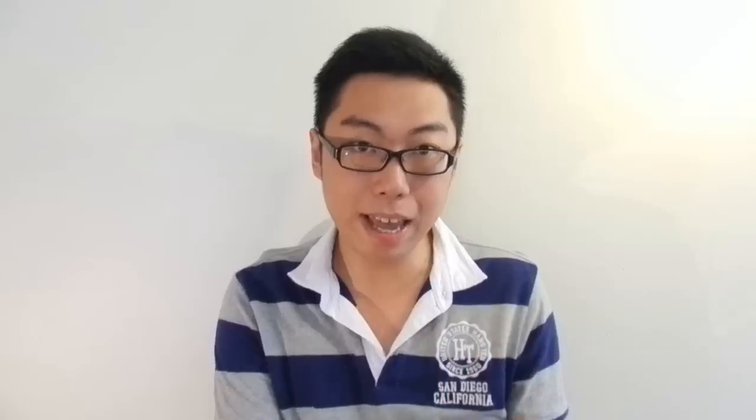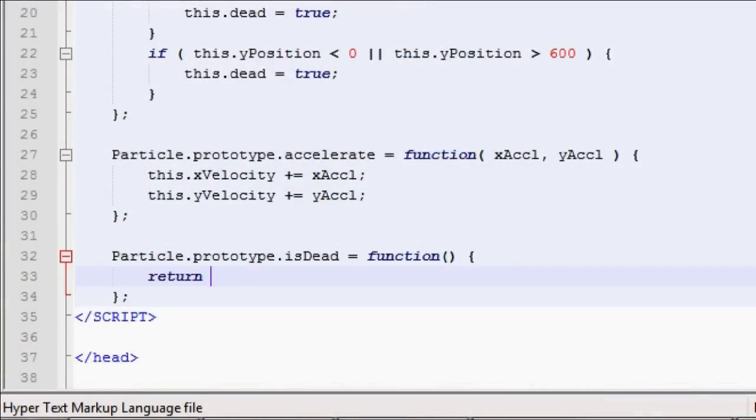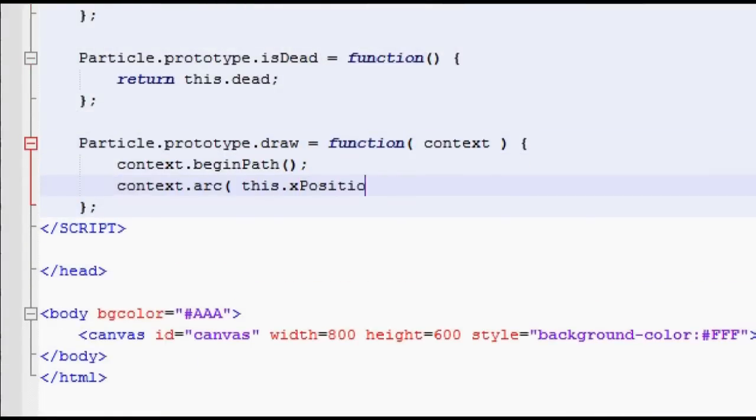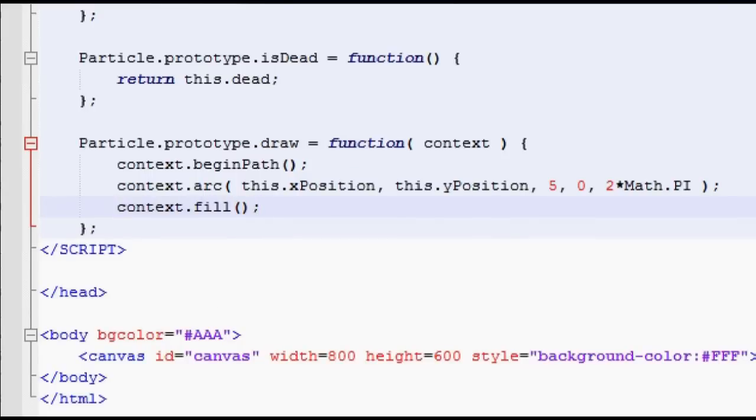Next up, we have an accessor called isDead. This simply returns the boolean value of the dead variable. Finally, we have a draw function. Now this may be optional or may be implemented very differently depending on how your programming language actually draws things on screen. Pass whatever parameters you need into the function. In my particular case, I do have to pass a graphics drawing context to the function. And that's it for step 2. What we've done is we've created a fully blown particle class that we're ready to throw into an animation with other instances of the particle class, and we will see our particle system in action.